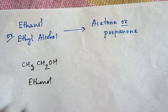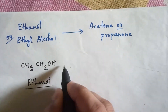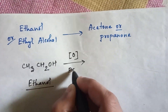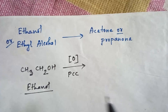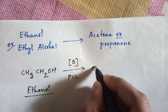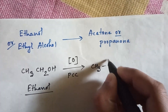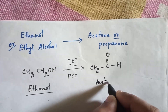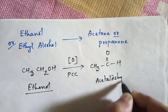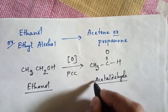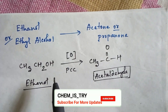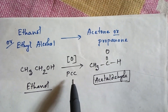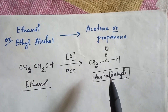Now if we do partial oxidation by PCC, then this alcohol will convert into an aldehyde and the product will be acetaldehyde. So in alcohol, if you do partial oxidation by adding PCC as a reagent, then you will get acetaldehyde.